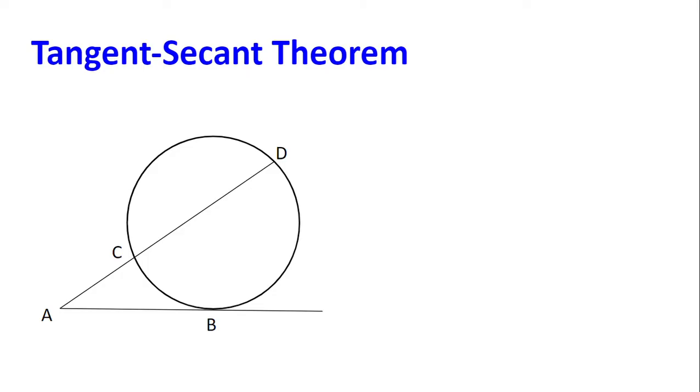So first off, we are going to go through the tangent secant theorem. In the diagram shown, we have a circle and a line AB, which is tangent to the circle. We also have the line ACD, where C and D are on the circumference of the circle, as shown.